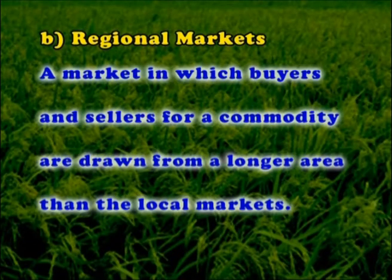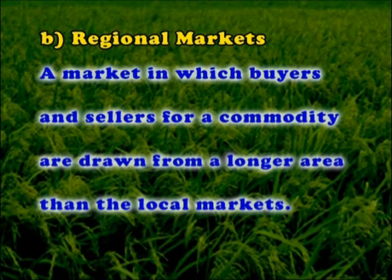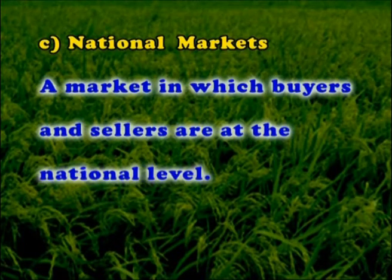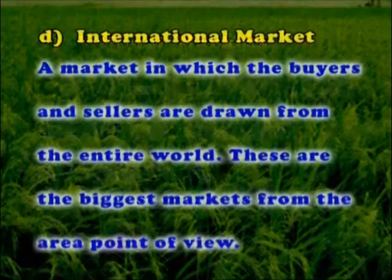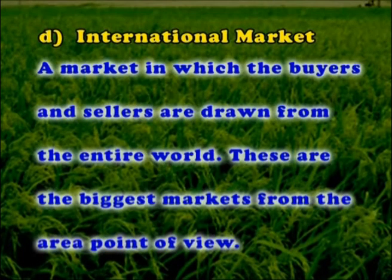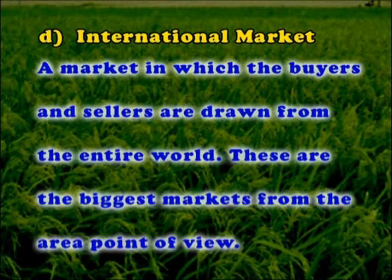A regional market is one in which buyers and sellers for a commodity are drawn from a larger area than local markets. Regional markets in India usually exist for food grains. A national market is one in which buyers and sellers are at the national level. An international market is one in which buyers and sellers are drawn from the entire world — these are the biggest markets from the area point of view.